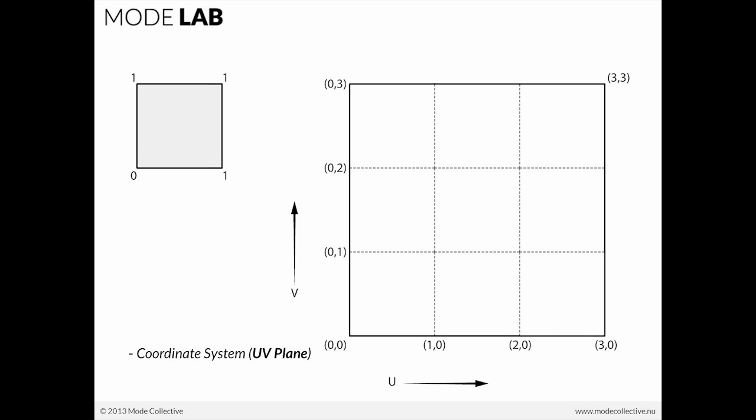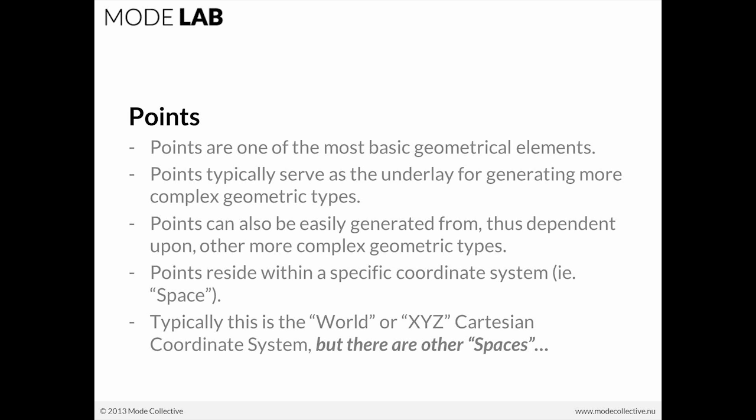The structuring of this grid by the spacing of unit 1 is a very easy way to understand how to orient yourself with regards to a seemingly complex structure. Points are really great for working with these modeling techniques because they're really basic geometric point elements. Because they're so basic, they typically serve as the underlay for generating more complex geometric types. Points can also be easily generated from — and are typically dependent upon — other more complex geometric types.